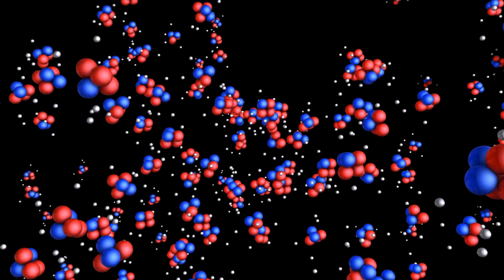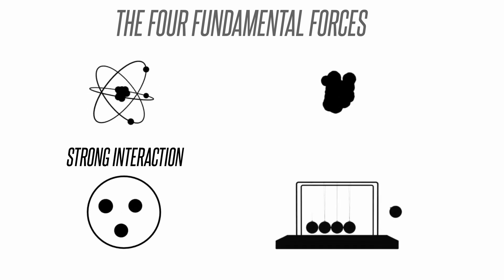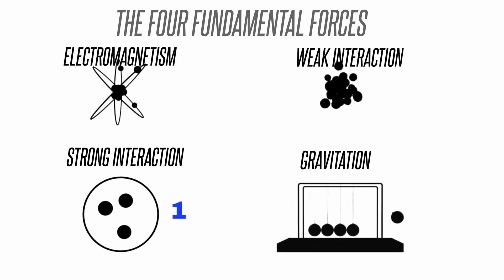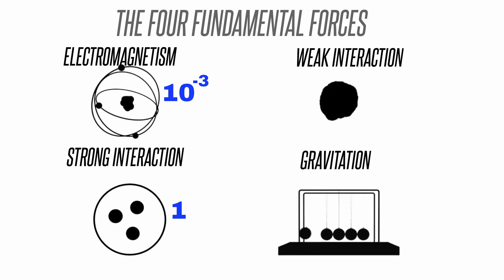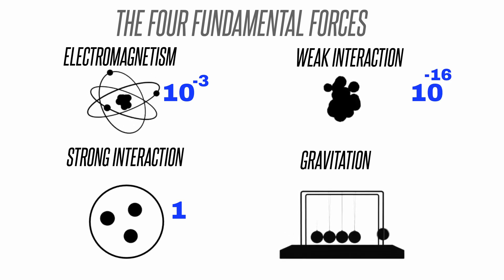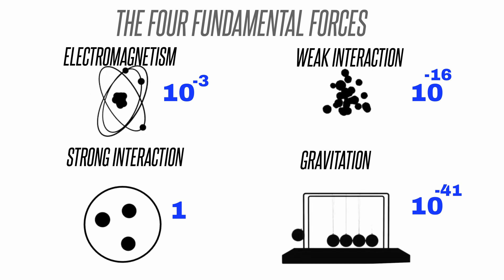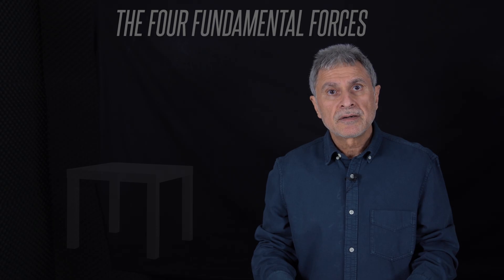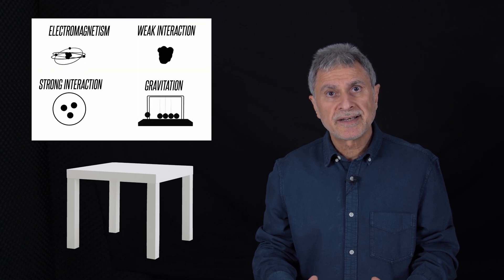When the universe was created with the Big Bang, four fundamental forces were created. The first is the strong force. The electromagnetic force is 10 to the minus 3 power weaker than that. The weak force is 10 to the minus 16th power. Gravity, or mass, is 10 to the minus 41st power of this. Just as a table stands on four legs, the universe balances on these four forces.